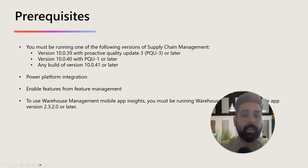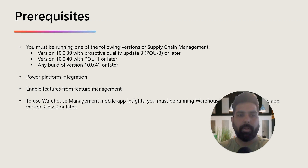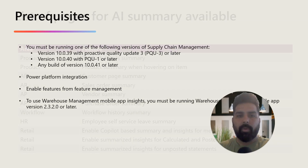Apart from that, to have Copilot and AI features work in D365 FNO, we need to have the Power Platform integration, enable the features in Feature Management. One of the summary features is on the Warehouse Management mobile app side — the warehouse app version should be 2.3.2.0 or later. These are the prerequisites you need to use these features.